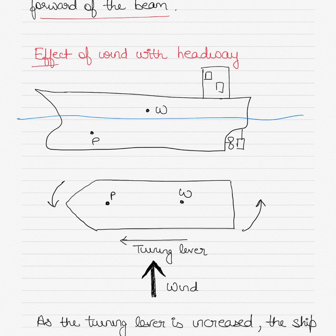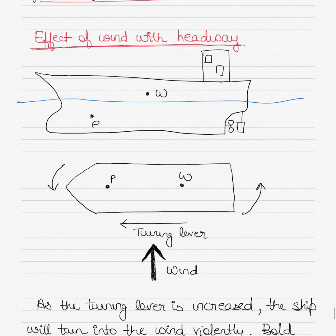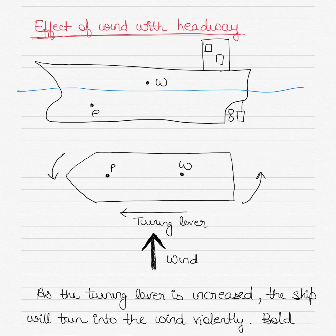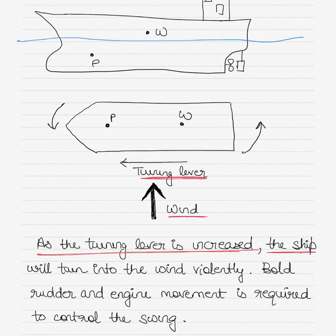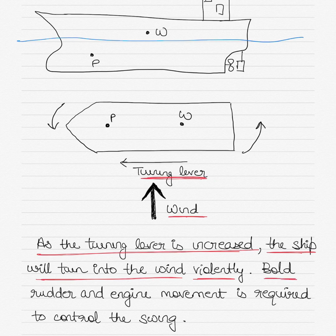When the vessel is going ahead, the pivot point lies at about one third of the ship's length from forward, so the turning lever increases — the distance between the pivot point and the windage point has increased. The wind is again on the port beam, but in this case the ship will turn into the wind violently. The stern of the vessel will cant to starboard and the bow will cant to port towards the wind. Bold rudder and engine movements are required to control the swing in such cases.